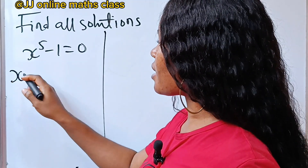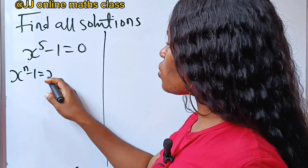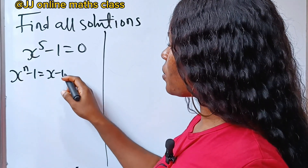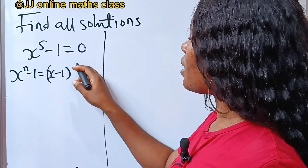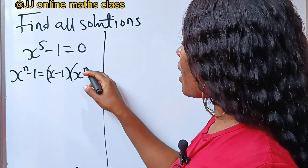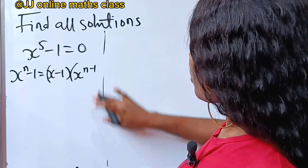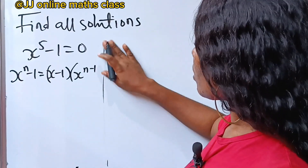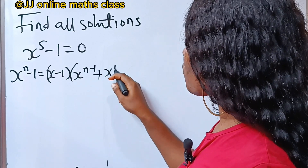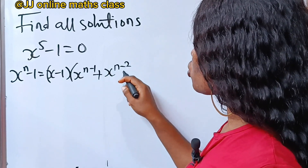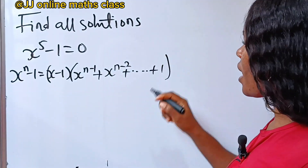Let's note that x to the power of n minus 1 is equal to x minus 1, multiplied by x to the power of n minus 1 plus x to the power of n minus 2, plus up to plus 1.